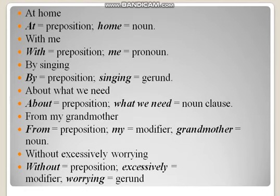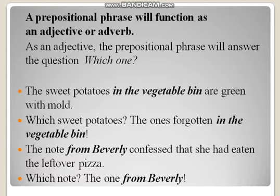'From my grandfather' — 'from' is the preposition, 'my' is a modifier, and 'grandfather' is the noun. This shows how a modifier can appear between the object and the preposition. 'Without excessively worrying' — 'without' is the preposition, 'excessively' is a modifier, and 'worrying' is a gerund. A prepositional phrase will function as an adjective or adverb; it can be called an adjective phrase or an adverb phrase.